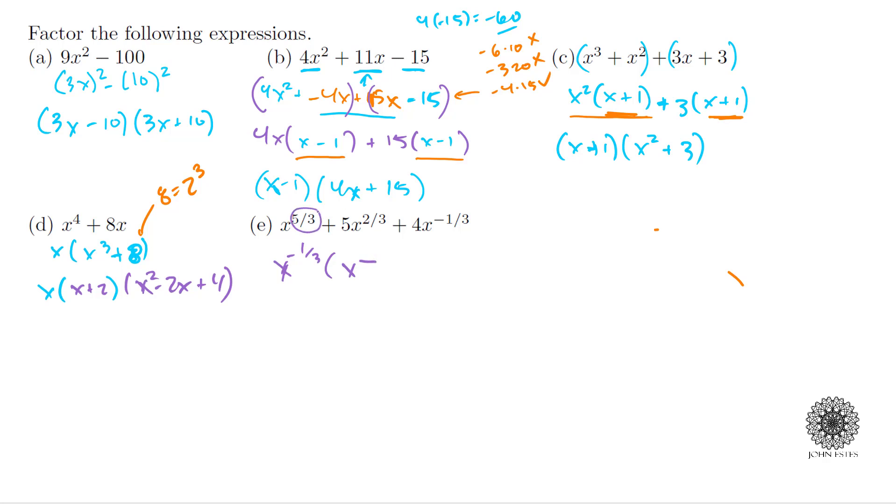If you notice, if I distribute that -1/3 across x^(6/3) I get x^(5/3). Then I have 5x to the 3/3 power, same idea, because when I multiply in the x^(-1/3) across there it gives me x^(2/3). Lastly I took out x^(-1/3), so this is just going to be a positive 4. If you try to distribute across you'll notice you'll get exactly what you had.